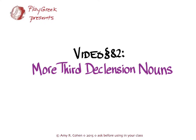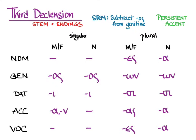This video goes with section 8.2 of Hanson and Quinn's Greek Intensive Course and covers more third declension nouns. Hanson and Quinn covers the material on pages 259 to 262. These are your third declension endings. To find out what stem to put these endings on, you need to go to the genitive provided in your vocabulary, take off the -os from that genitive singular, and add these endings. Generally speaking, the accent is persistent.